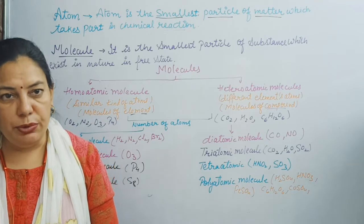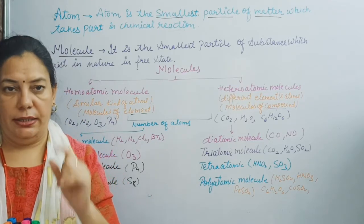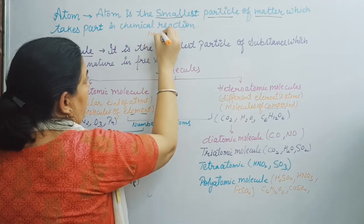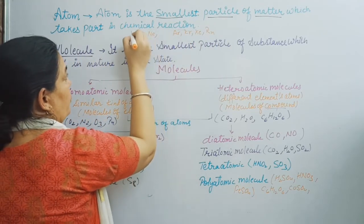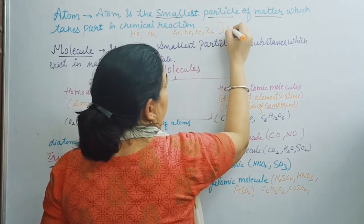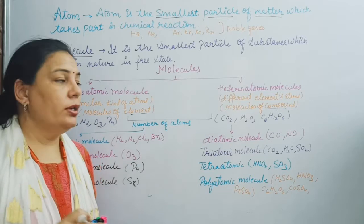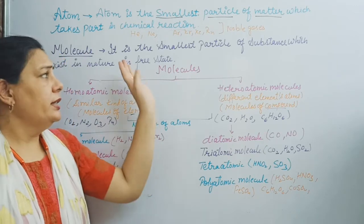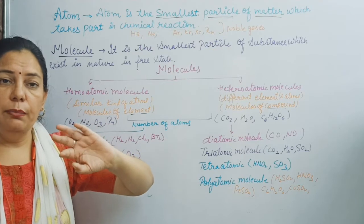However, we have some exceptions. All noble gases exist as single atoms in nature in a free state, because they do not react with any other element under normal conditions. The noble gases are helium (He), neon (Ne), argon (Ar), krypton (Kr), xenon (Xe), and radon (Rn). These are all examples of monoatomic gases.